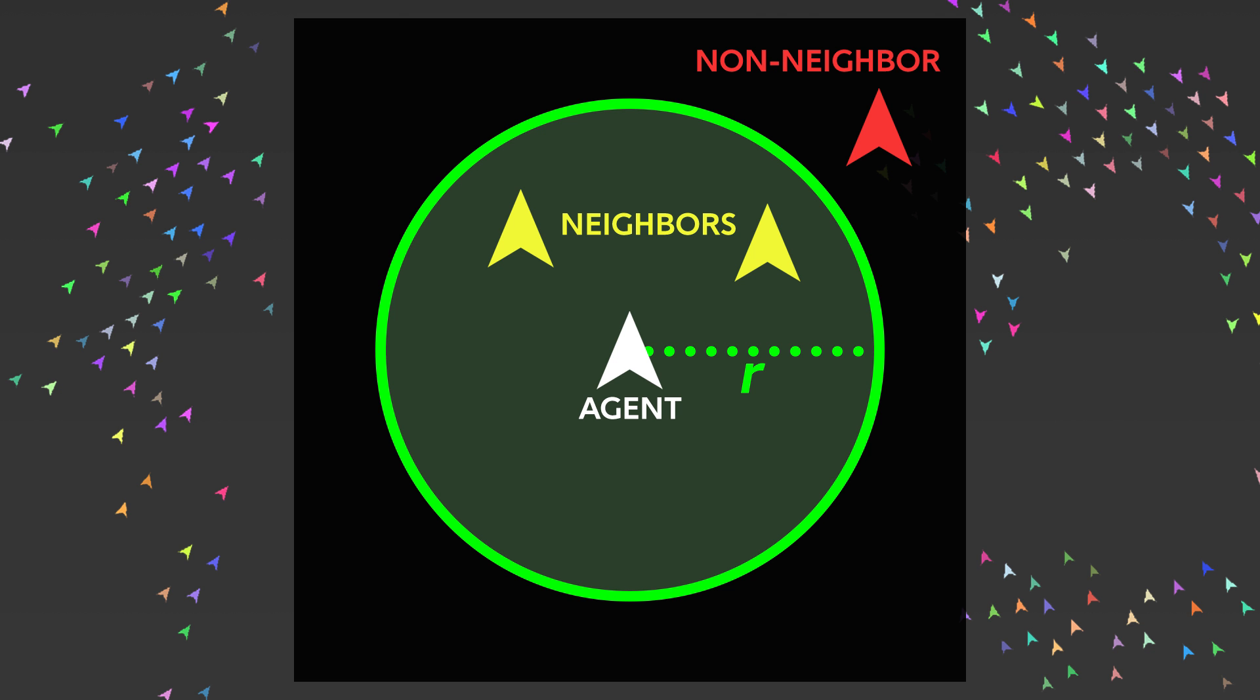It's worth noting that each behavior takes into account all of an agent's neighbors within some radius. So when we refer to an agent's neighbors, know that we mean other agents within that radius.